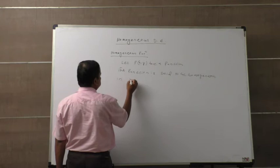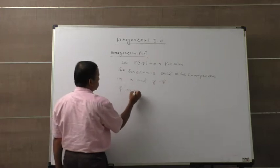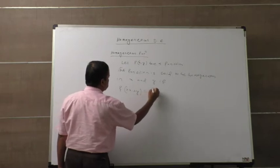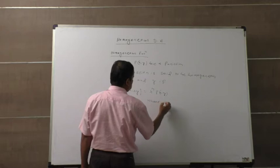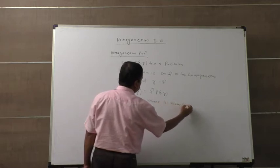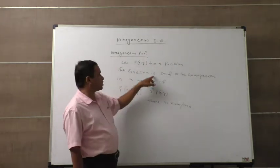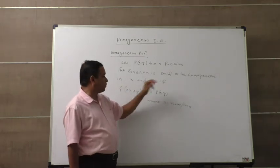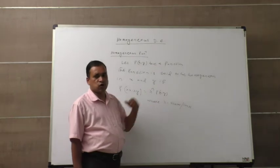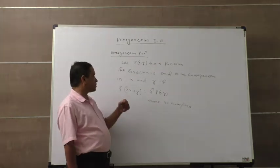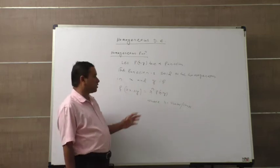If f(λx, λy) equals λⁿ times f(x, y), then the function is Homogeneous in x and y. That means, in place of x you put λx, and in place of y you put λy. If λ can be completely taken out as common, then the function is Homogeneous.